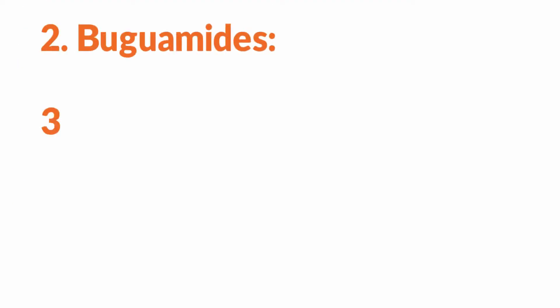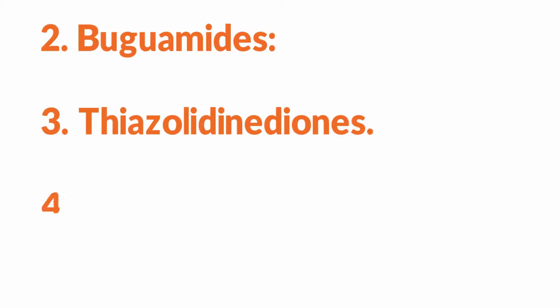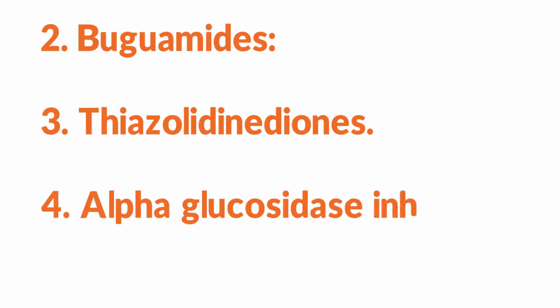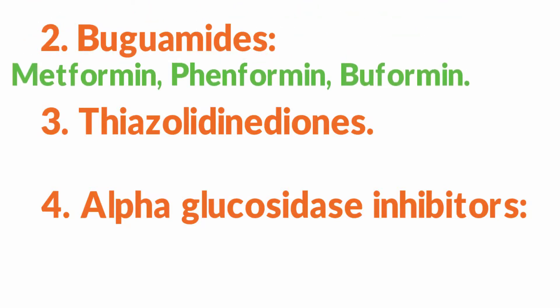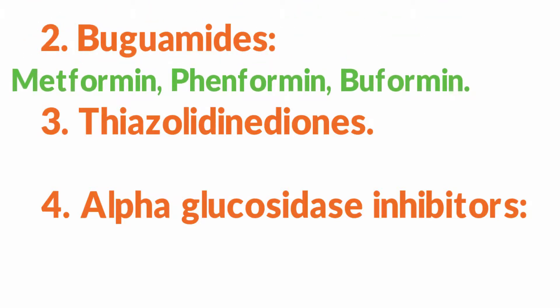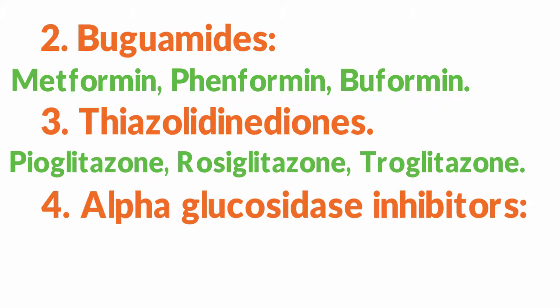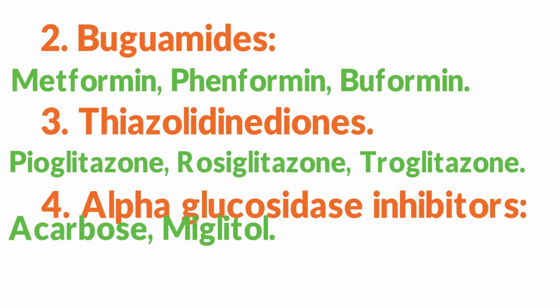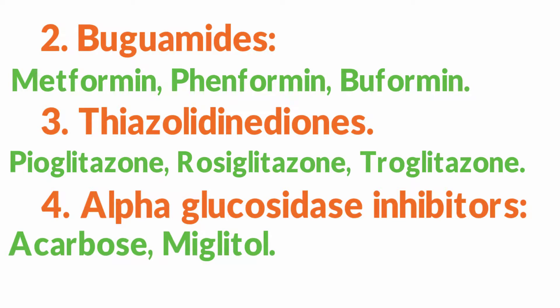Biguanides include metformin, buformin, and phenformin. Thiazolidinediones include pioglitazone, rosiglitazone, and troglitazone. Alpha-glucosidase inhibitors include acarbose and miglitol.